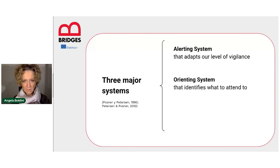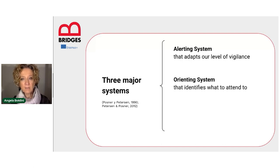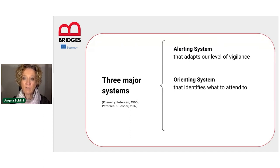The second network is the orienting network. This system determines where to direct our attention in space — what to focus on amongst the masses of stimuli that we always have around us.